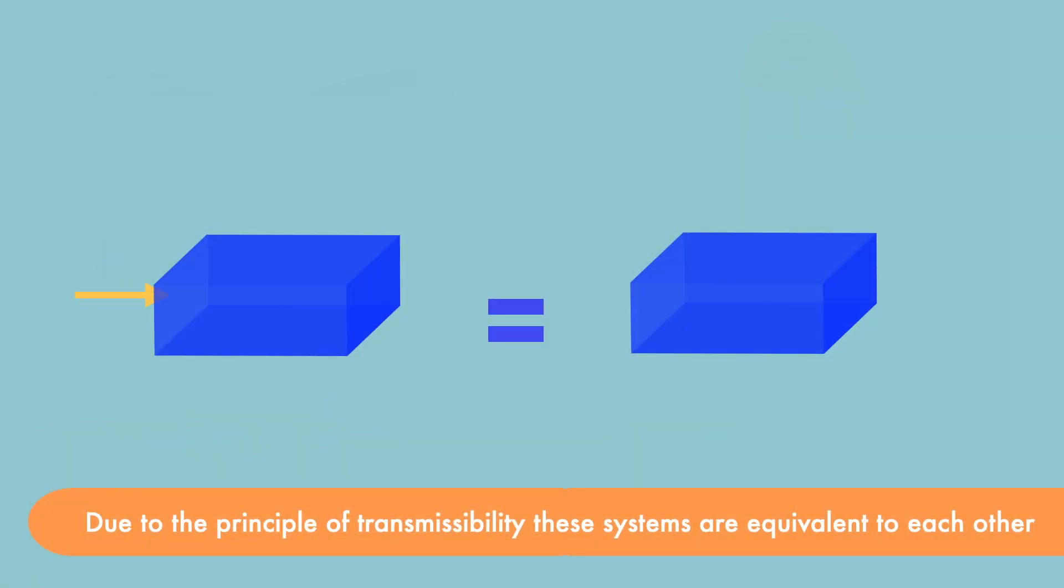In these systems also, the pull or push by force P with same line of action produces the same effect on the rigid body.